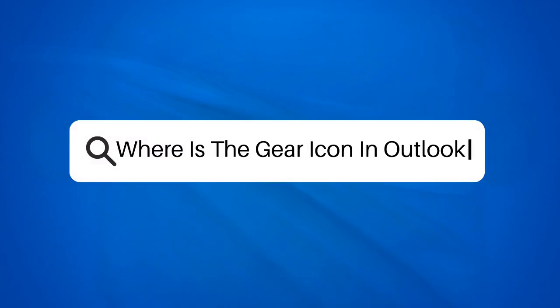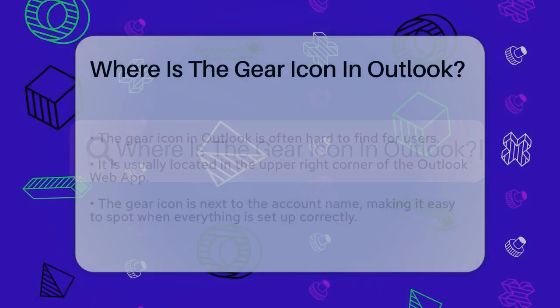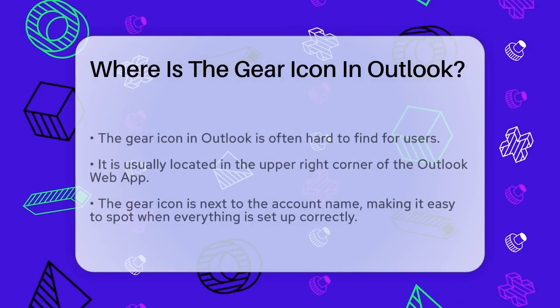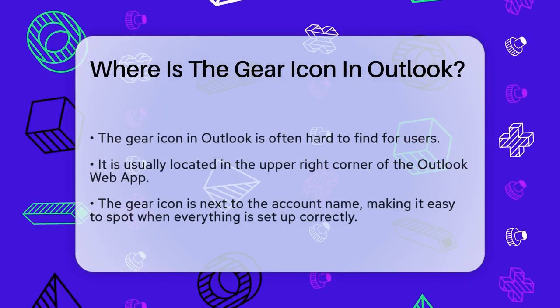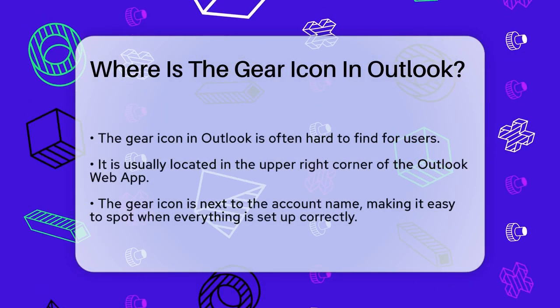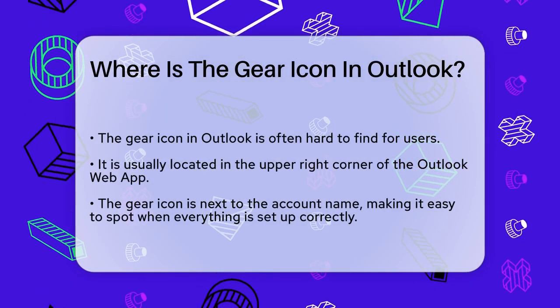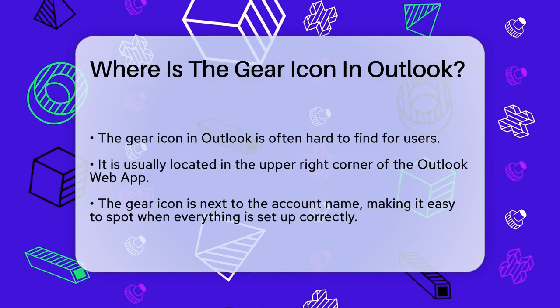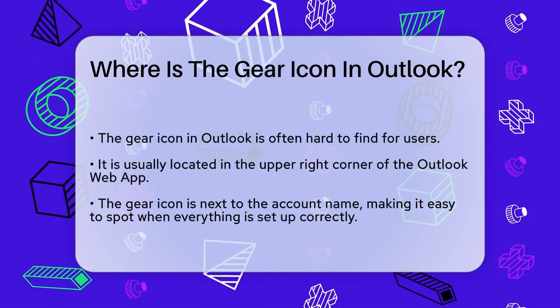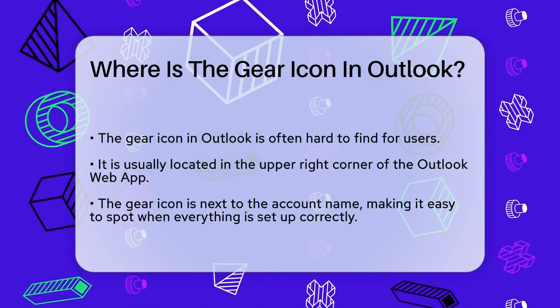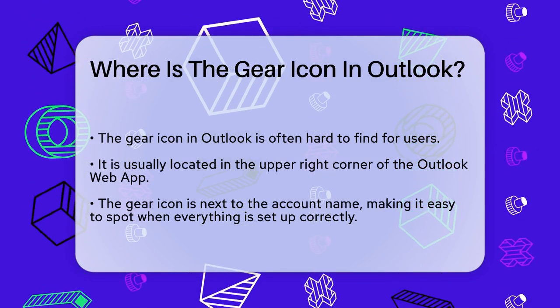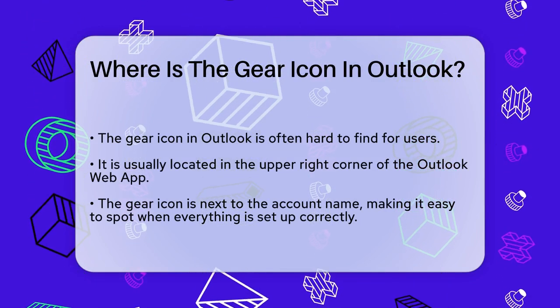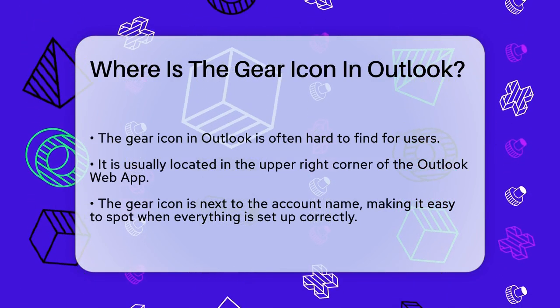Where is the gear icon in Outlook? Have you ever found yourself scrolling through Outlook, trying to change some settings, but you can't seem to find the gear icon? This is a common issue, and it's easier to resolve than you think.